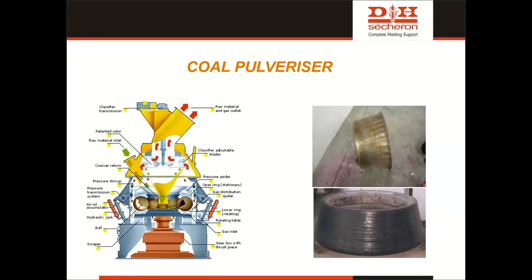The coal enters the mill and the table rotates while the tires are stationary. Whatever crushed coal falls in will get crushed to very fine coal particles. It is a complex equipment with a rotating table, a lower ring to rotate, a gas distributor, and a pressure spider — it is basically a compressed, vacuumized kind of equipment.